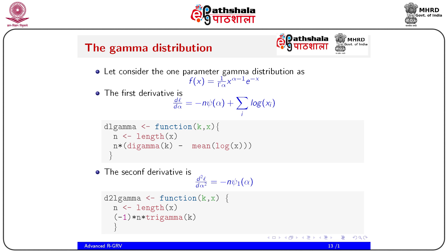Now implementing with a gamma distribution example. Consider the one-parameter gamma distribution: f(x) = (1/Gamma(alpha)) * x^(alpha-1) * exp(-x). The first derivative dl/dalpha = -n * digamma(alpha) + sum(log(xi)). Define dl_gamma as a function of k and y: n = length(x), return n * digamma(k) - mean(log(x)). The second derivative d2l_gamma uses trigamma: return -n * trigamma(k). The digamma and trigamma functions are R built-ins.